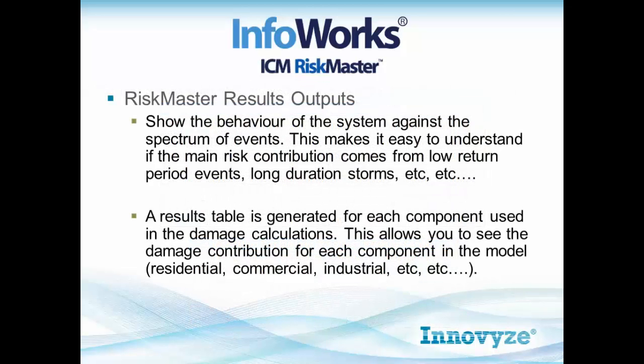These outputs show the behavior of the system against the spectrum of events, making it easy to understand whether risk contributions come from low return period events or long duration storms. The relative table is done for each component used in the damage calculations, allowing you to compare contributions from different parts of the model — for example, the difference between residential and commercial, or between commercial and industrial, or between properties of different age, or between different social classes.